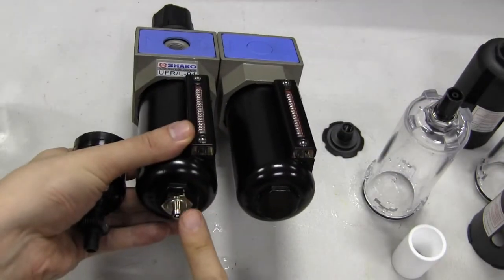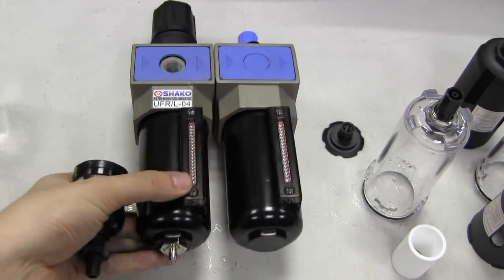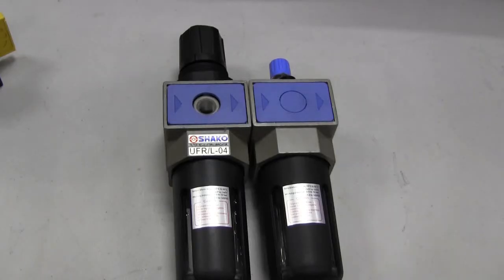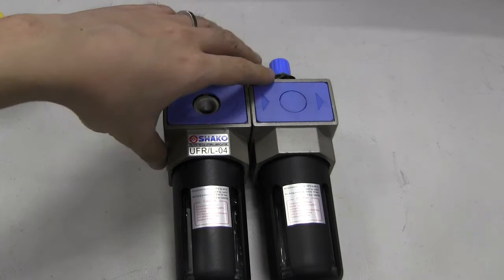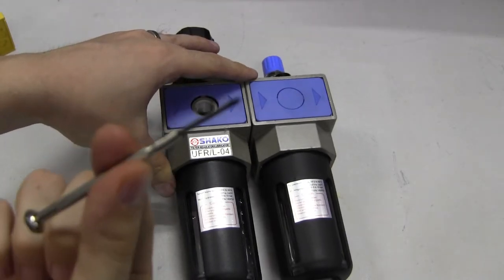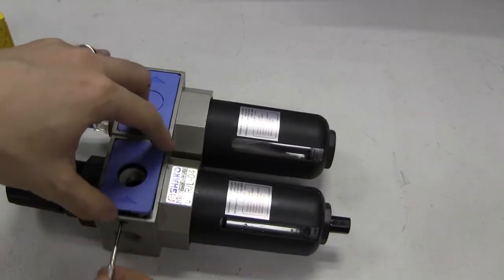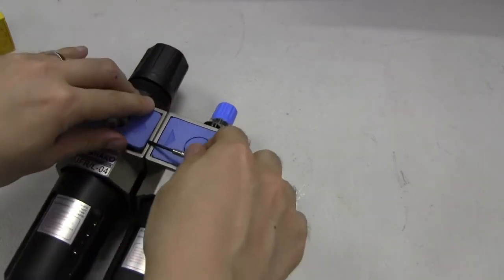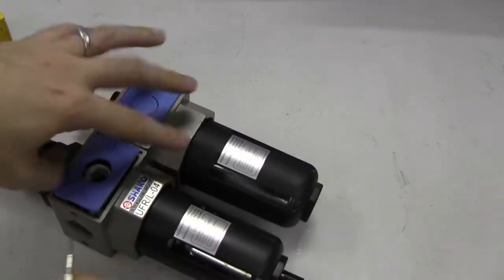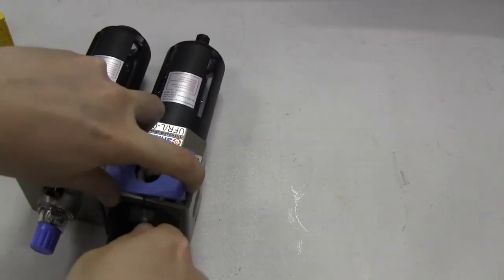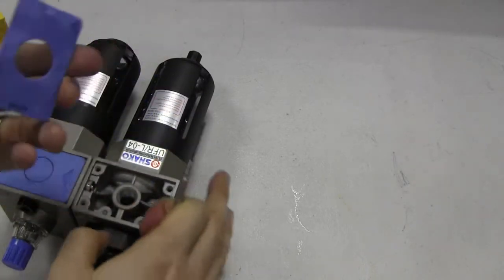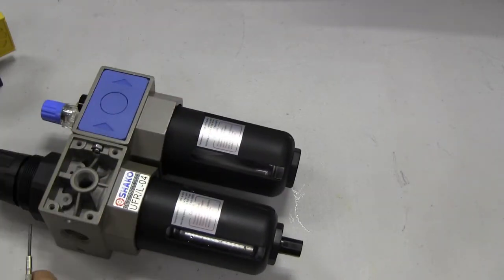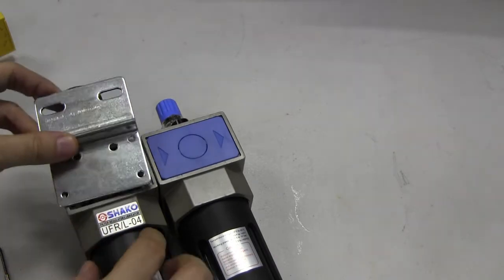When you're installing the bracket for the filter regulator lubricator unit, what you just need is a screwdriver. Just pop out the plastic here. Make sure you just do it nice and light, so that... yep, that's the plastic.